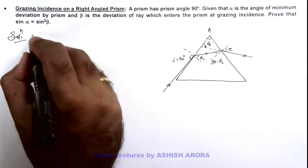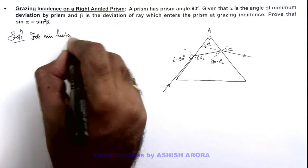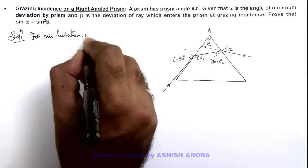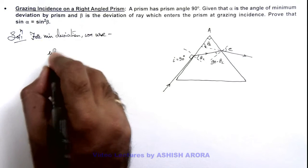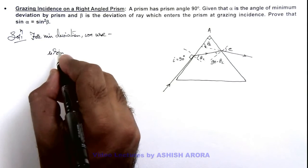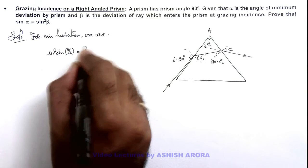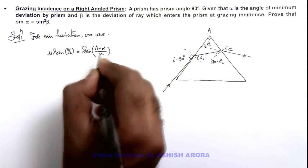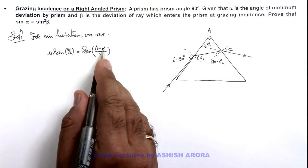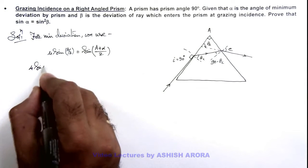Here we can write for minimum deviation of light. We use mu sine of A by 2 is equal to sine of A plus alpha by 2, because we are given that alpha is the angle of minimum deviation. If we simplify this relation this will give us mu sine A by 2.